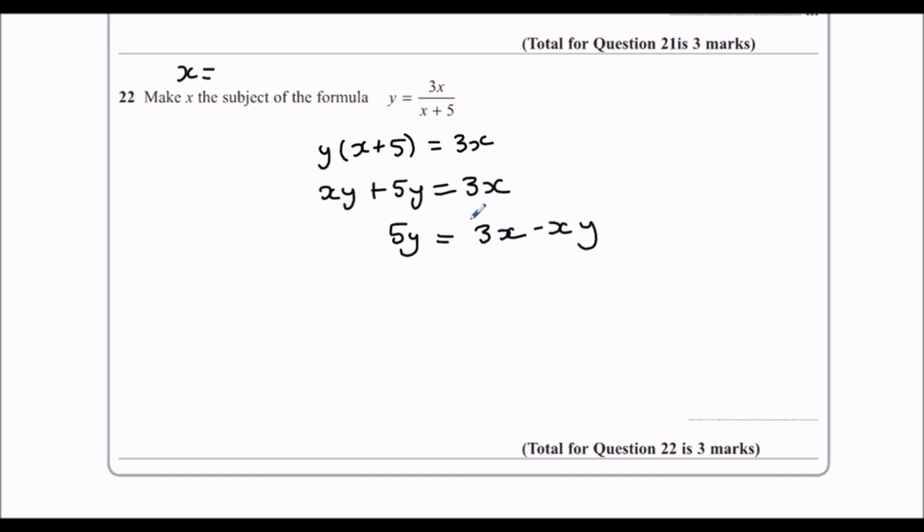Then I need to get x by itself. I need one x. So the way to do that is to factorize. So I'm going to take x out of this and have 3 minus y inside a bracket. Then the last step, divide by 3 minus y, and we have made x the subject.